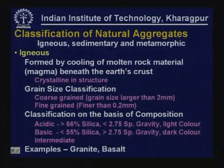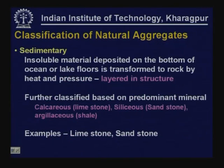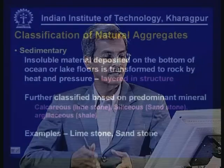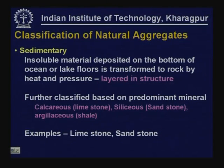Typical examples of igneous rocks are granite and basalt. Sedimentary rocks are insoluble materials deposited on the bottom of ocean or lake floors and transformed to rock by heat and pressure. These are usually layered in structure. They are further classified based on the predominant mineral: calcareous — typical example being limestone — siliceous, example being sandstone, and argillaceous, example being shale.